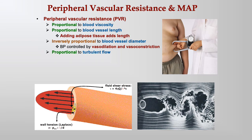PVR is also proportional to turbulent flow. Imagine a smooth river versus one full of rapids — the rocks resist the flow of water. Atherosclerotic plaques create turbulent flow in blood vessels, which increases blood pressure. The plaques also decrease vessel diameter, raising pressure further. This is why diet matters: more plaques mean higher blood pressure.